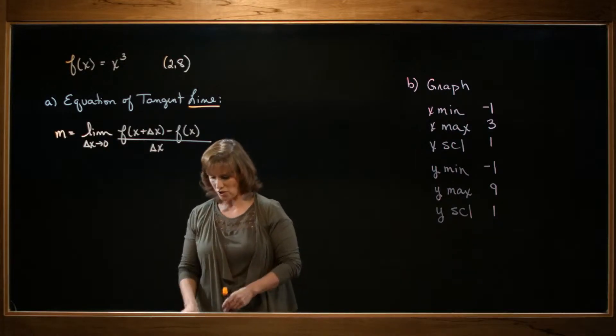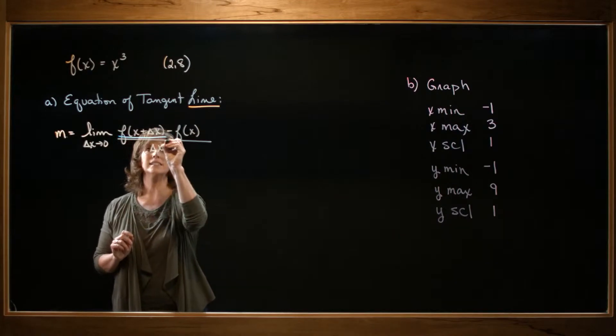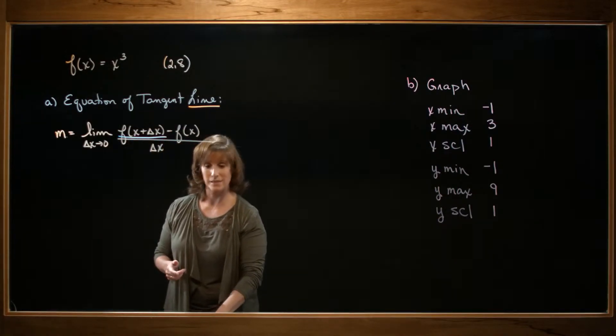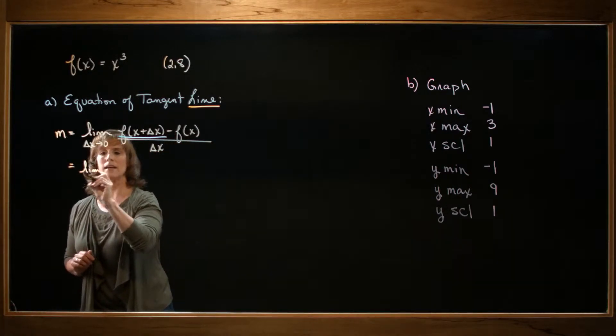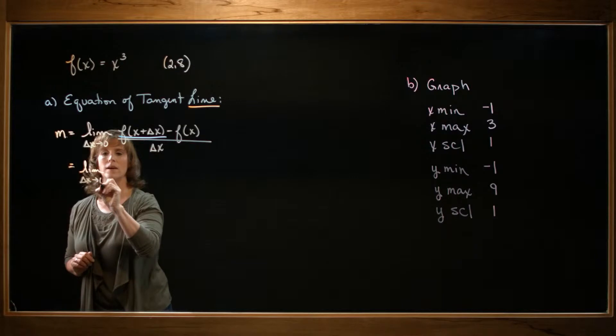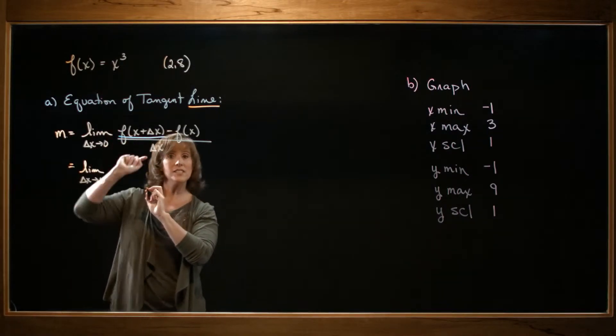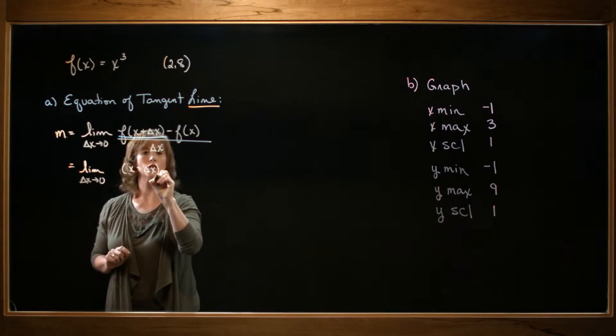So let's go ahead and start with the inside piece, which is going to be the function value when the input is x plus delta x. So I'm going to have the limit as delta x approaches zero of f of x plus delta x. Well, my function tells me to cube the input. So that's going to be x plus delta x cubed.